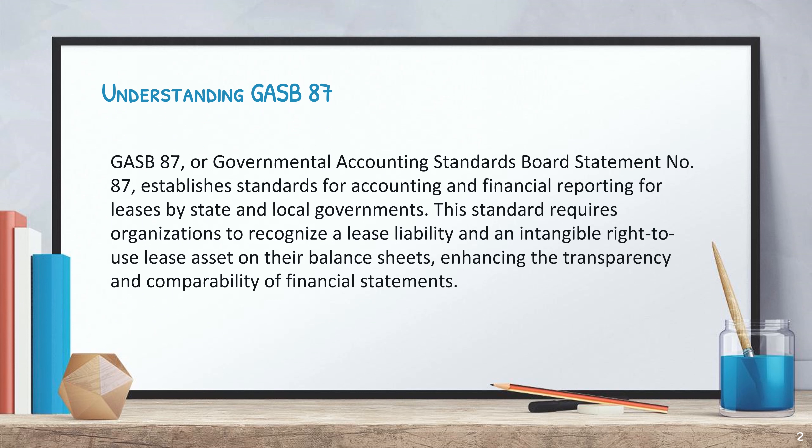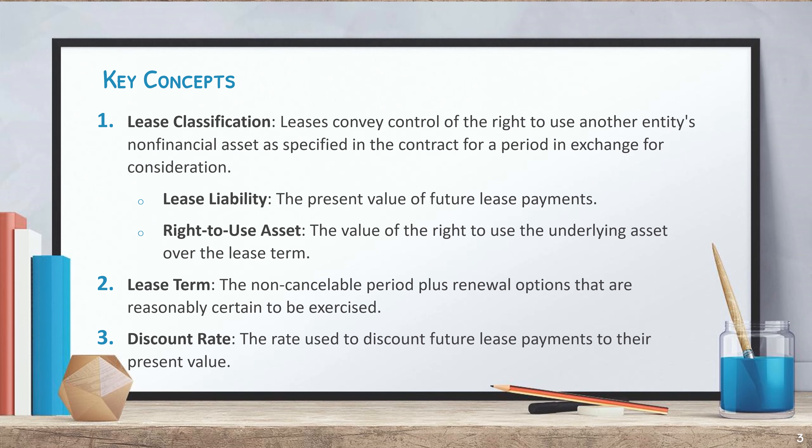GASB 87, or Governmental Accounting Standards Board Statement Number 87, establishes standards for accounting and financial reporting for leases by state and local governments. This standard requires organizations to recognize a lease liability and an intangible right-to-use lease asset on their balance sheets, enhancing the transparency and completeness of financial statements.